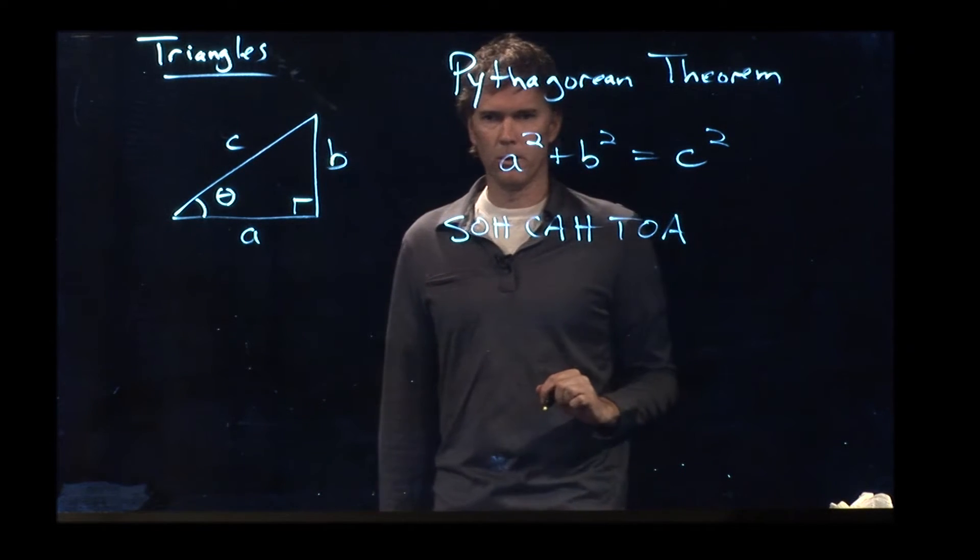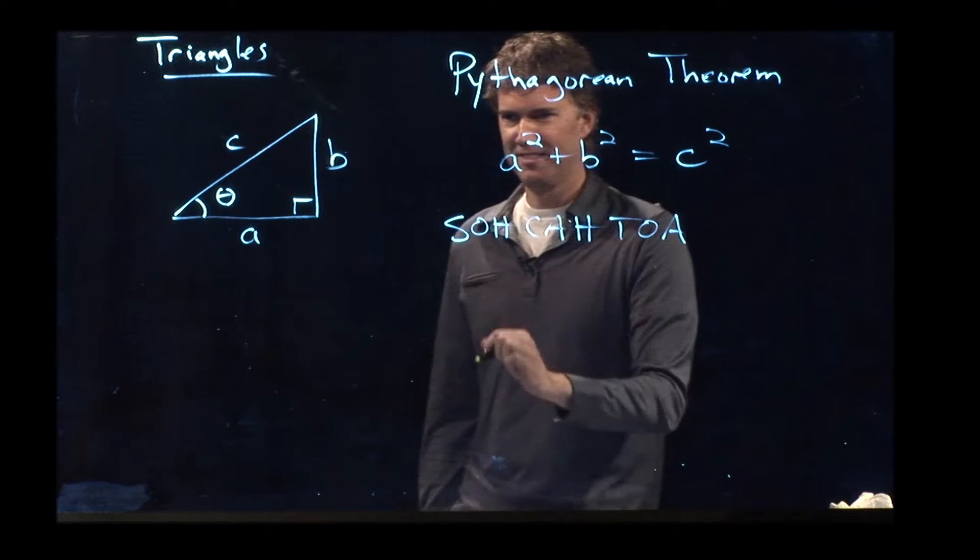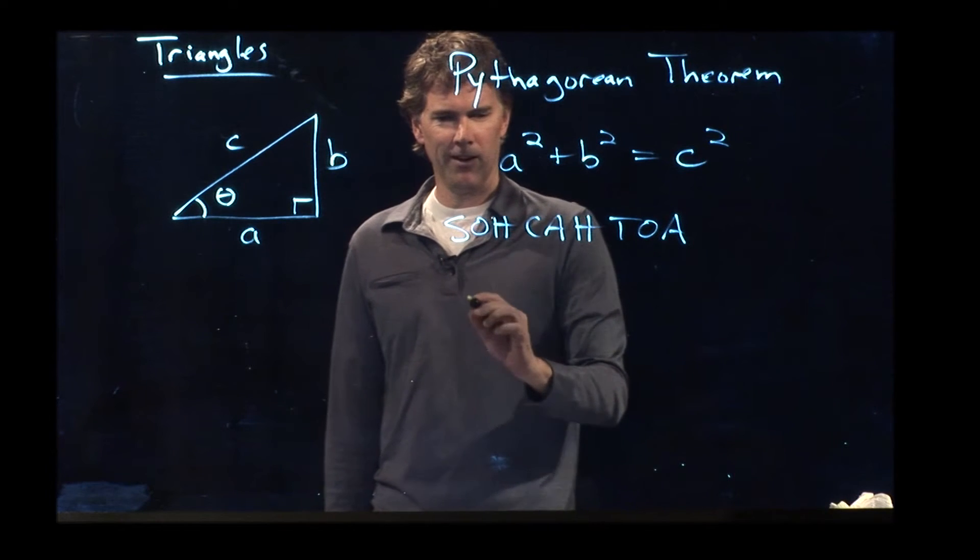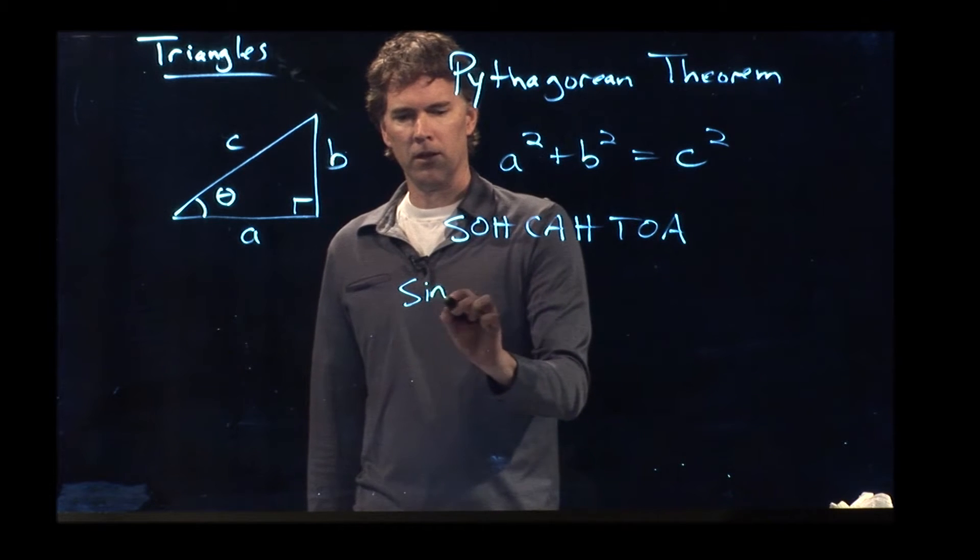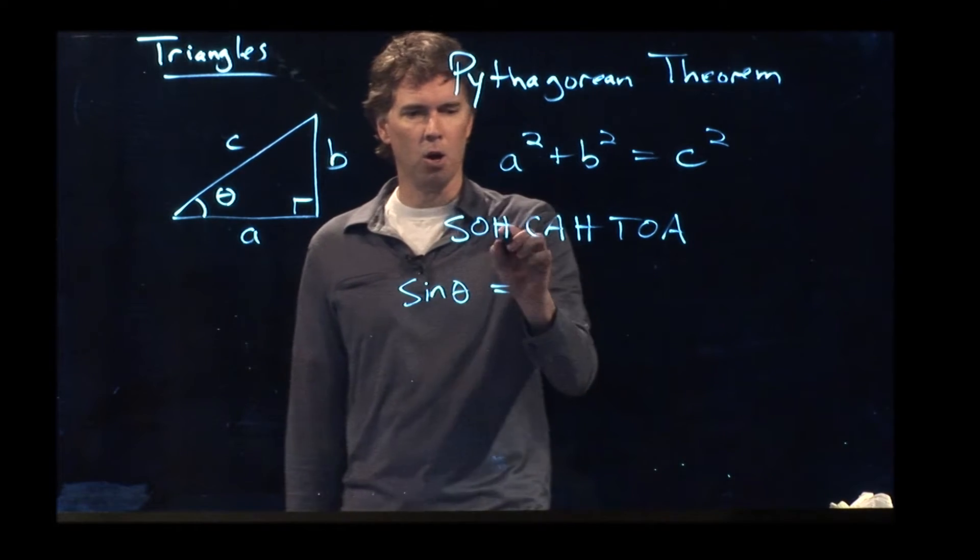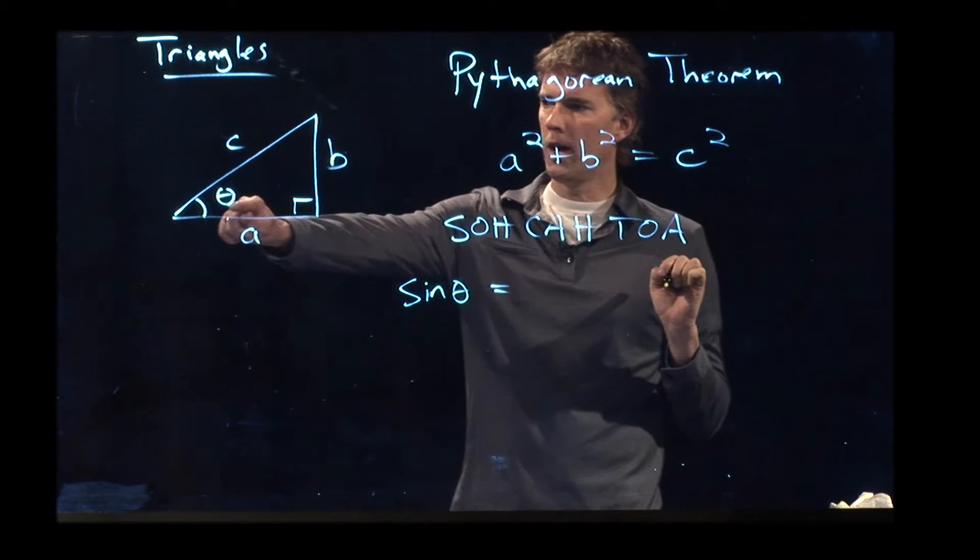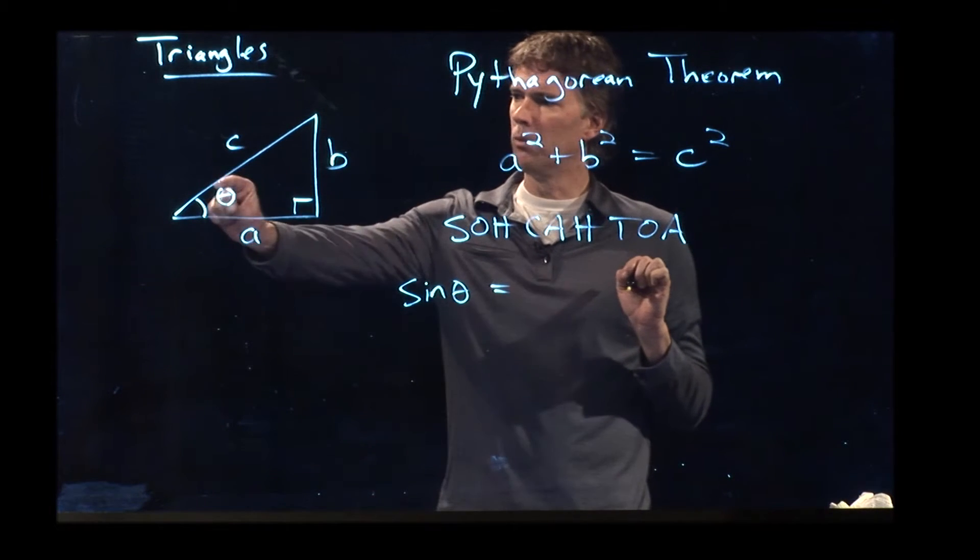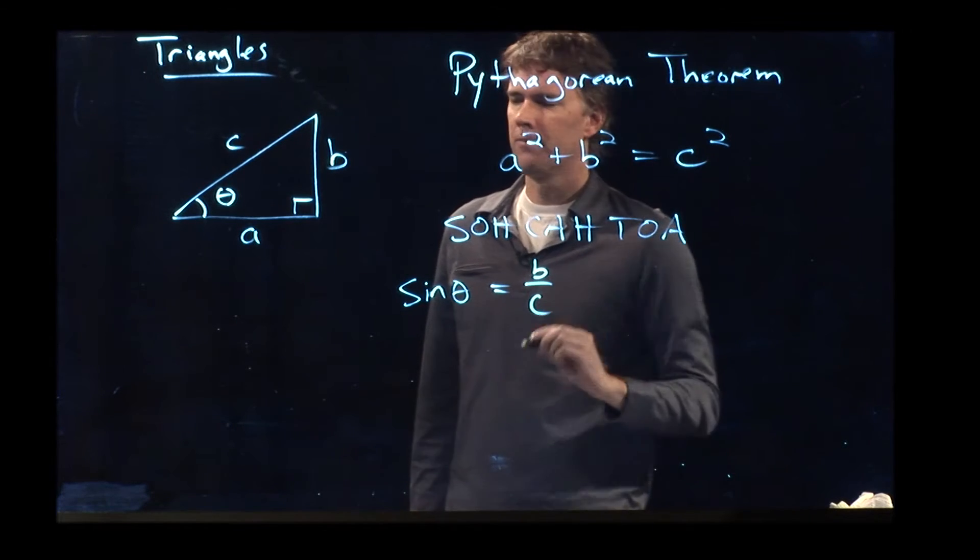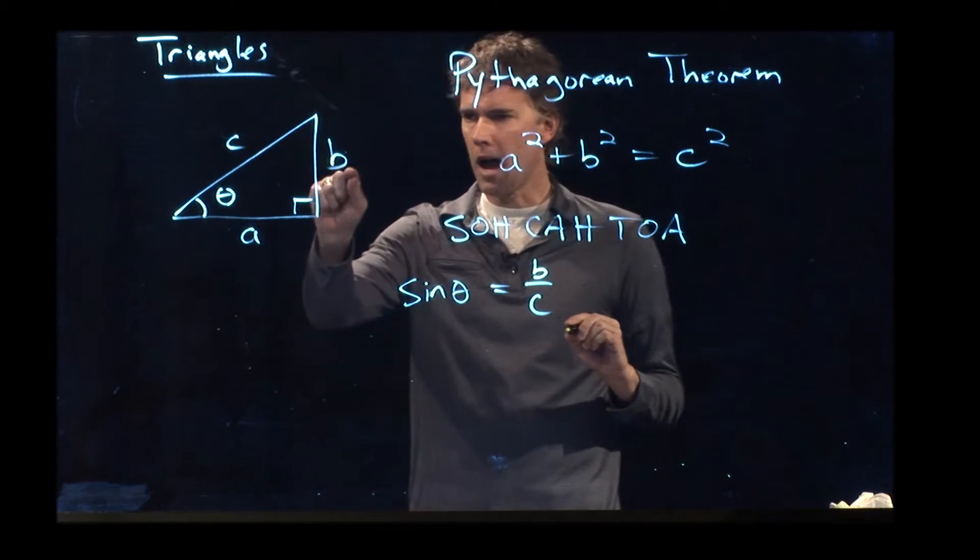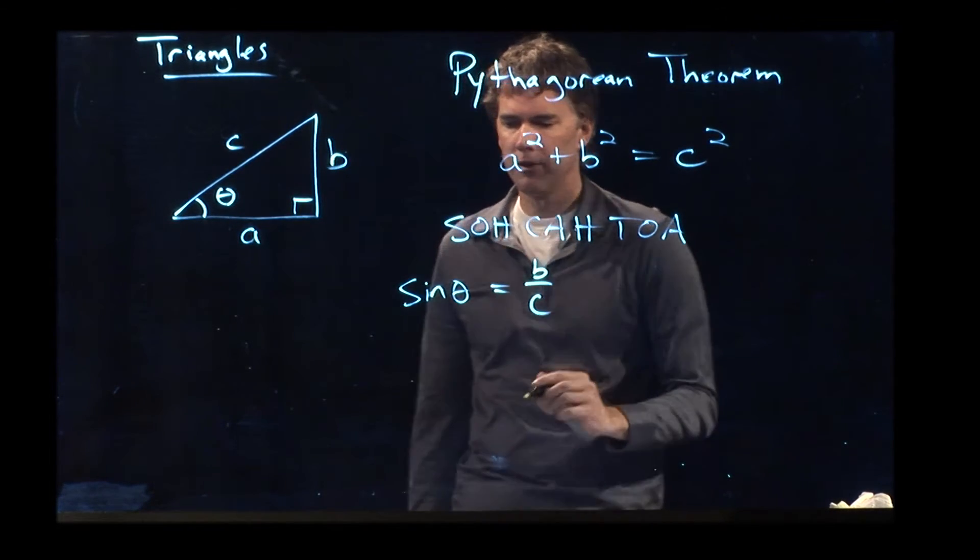I won't tell you what I told you earlier about what that means. You probably all remember. Sine is equal to opposite over hypotenuse. In this case, what is opposite the angle? Well, it's B. Sine of theta is opposite over hypotenuse, B over C.